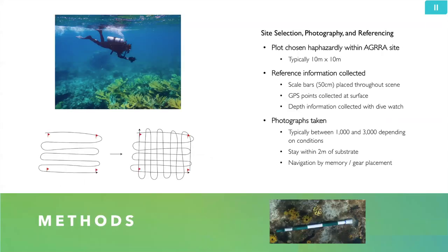The first step is site selection. What we have done is for the sites that we typically collect point count data within the AGRA database, we've chosen a plot within that site or on that reef, typically about 10 by 10 meters. Before we take any photographs, we collect geo-reference information on that site. We place scale bars — all exactly 50 centimeters long with color breaks at every five or ten centimeters — throughout the scene, usually around five or six.